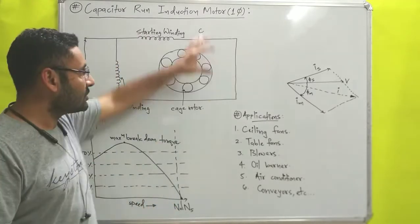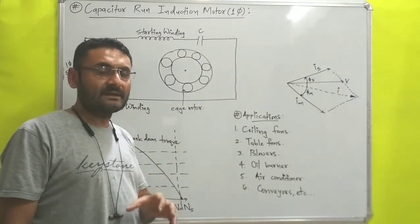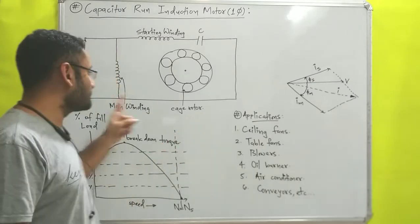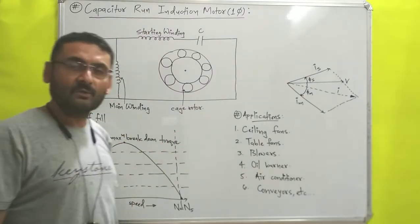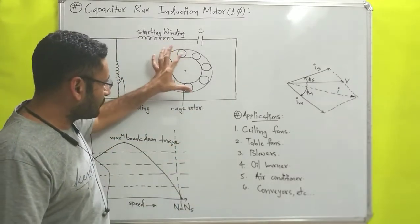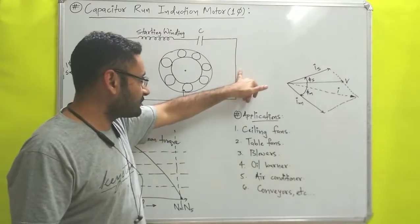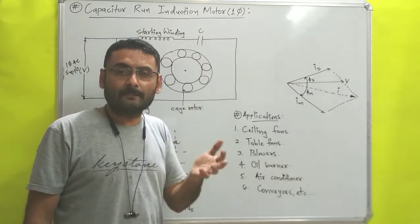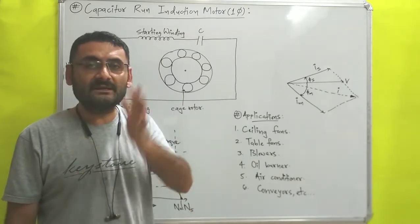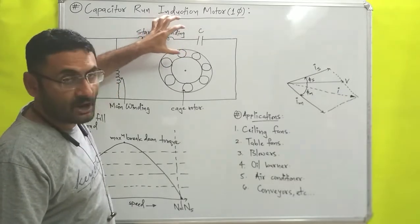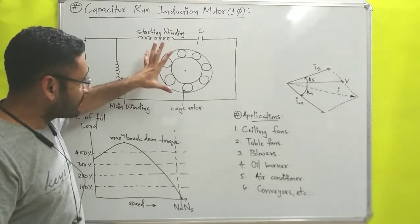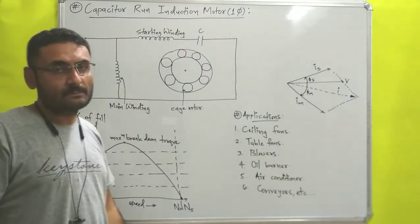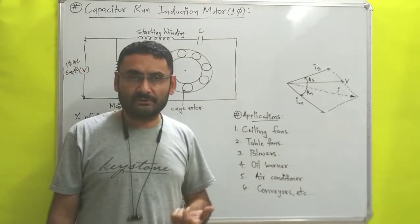A question may arise: how does that capacitor run the motor? The simple answer is that the capacitor will produce a phase difference between the two currents flowing from the main winding and the starting winding. Due to that phase difference, the rotor will start to rotate. Since a centrifugal switch is not used here, even when the rotor reaches 70% of its maximum speed, the starting winding will not be separated from the main circuit. With the help of the capacitor, the rotor will keep continuing its rotation — that is why it is known as a capacitor run induction motor.